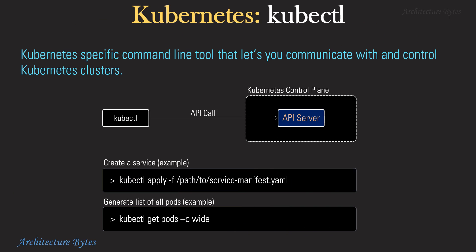In order to manage a Kubernetes cluster, you could use a tool called kubectl. This is a Kubernetes-specific command line tool that lets you communicate with and control Kubernetes clusters. It interacts with the API server on the Kubernetes control plane by making API calls to it when you issue kubectl commands.